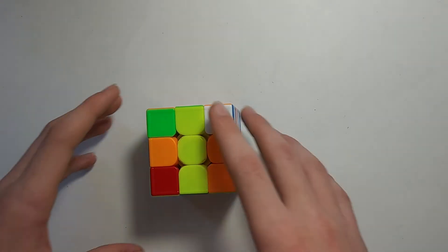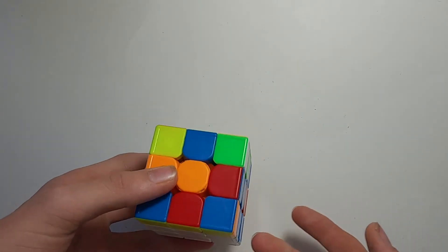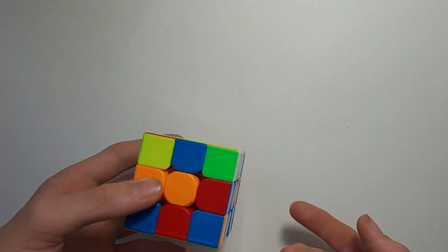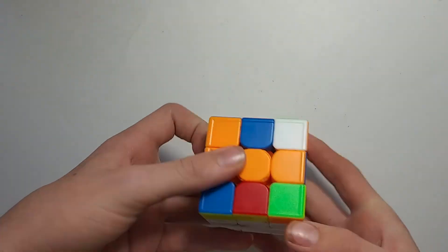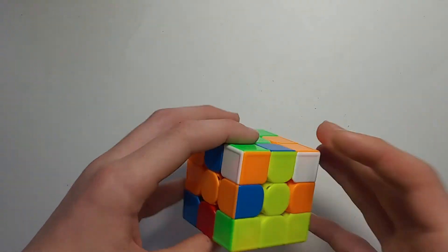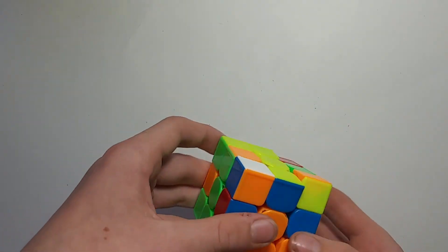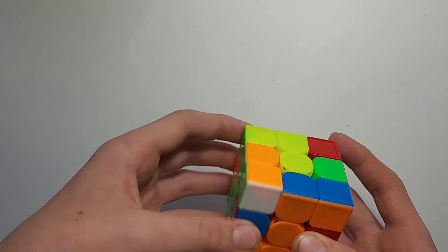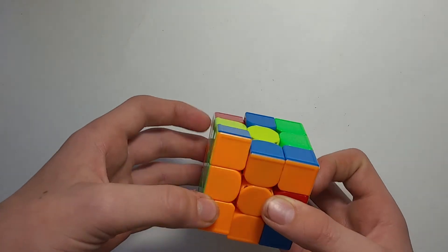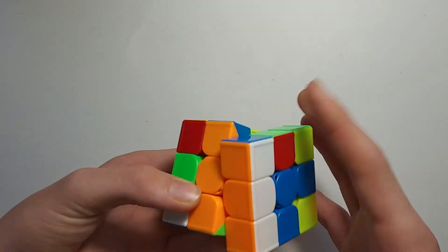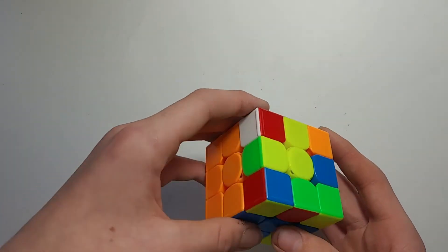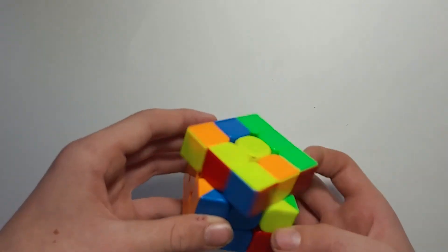Why is this an important look ahead technique? Well, in F2L you're going to be wanting to track pieces while inserting pairs. While inserting a pair, you're going to want to be tracking and taking note of where other pieces are. So as you finish that, you can move fluidly into your next pair.